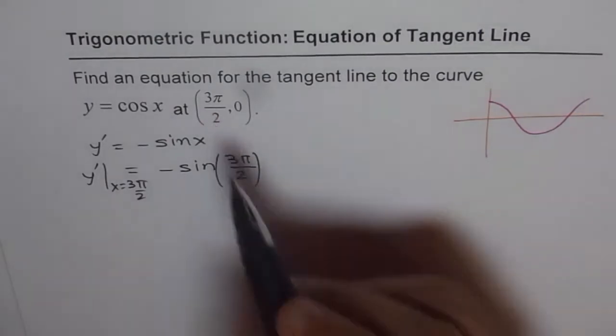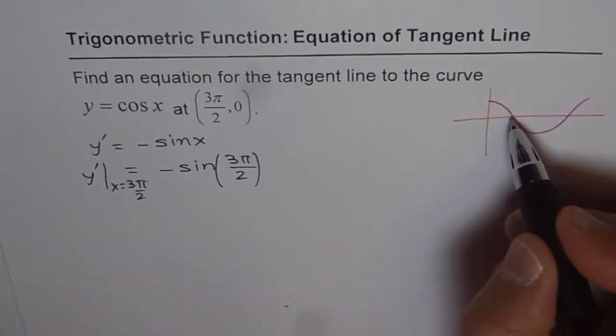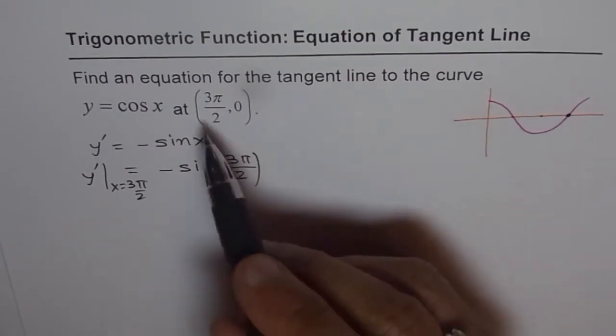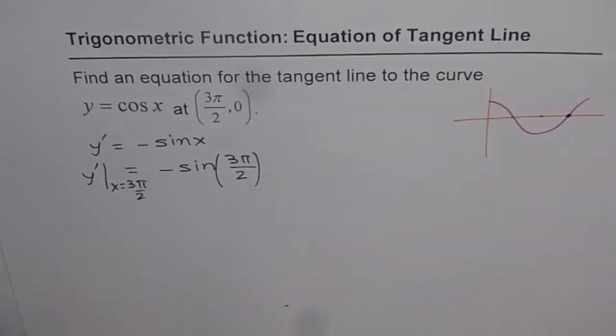And when we are saying at point 3π/2, so this is 0, this is π/2, 2π/2, 3π/2. So that's the value. 3π/2 is 0, so as you can see here.